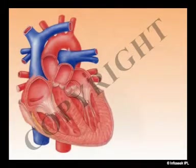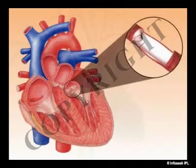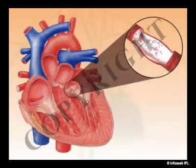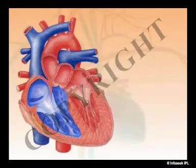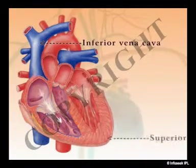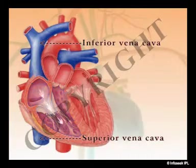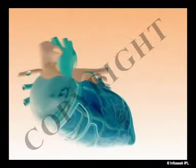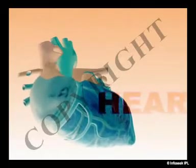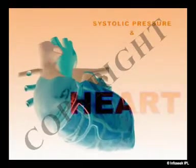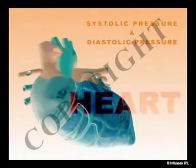Cardiac muscles forming the heart wall contract to push out the blood from its chamber to a great artery called the aorta, while cardiac muscles relax to receive blood from the great veins called the inferior and superior vena cava. This contraction and relaxation of heart chambers respectively gives rise to systolic and diastolic pressure within the wall.